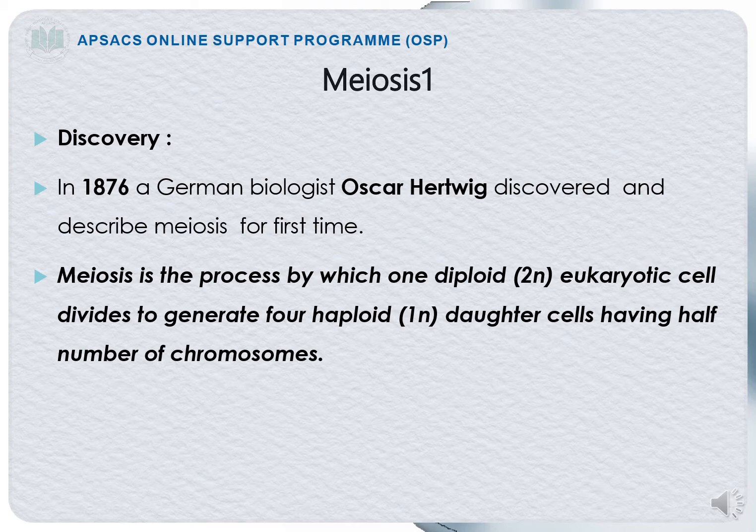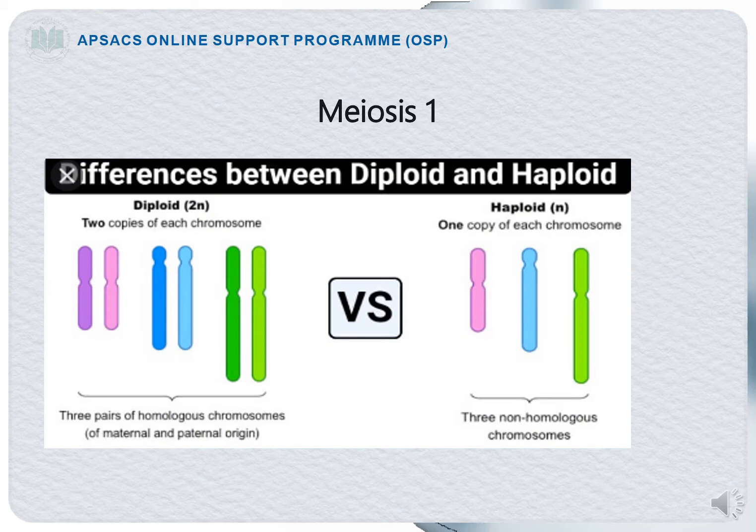In mitosis, two daughter cells are produced with the same number of chromosomes as the parent cell. In contrast, in meiosis a diploid cell produces four haploid daughter cells. You can see that diploid cells have chromosomes present in pairs, while haploid cells have single chromosomes.